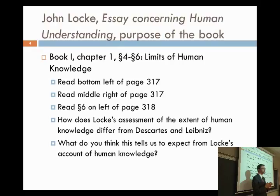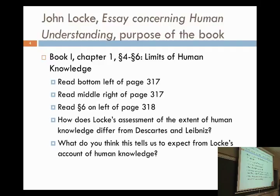I would like to say that he's suggesting that human knowledge is only so much as can be attained by one person, whereas Descartes and Leibniz discuss all knowledge and how that is attainable. I feel like Locke is only focusing on the amount of knowledge that one person can attain based on the things that surround them.